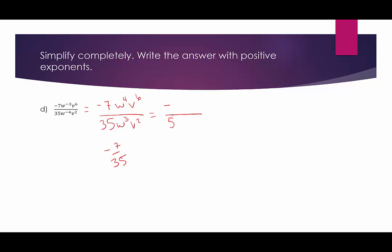Simplifying the w's: I have 4 factors of w in the numerator and 3 in the denominator, leaving 1 w in the numerator. So the final answer — pulling the negative out in front — would be negative w times v to the 4th over 5.